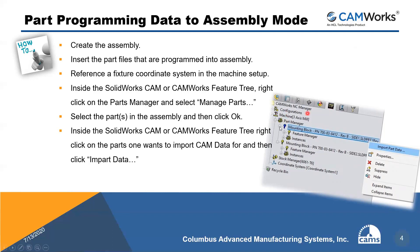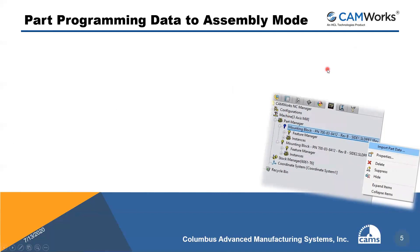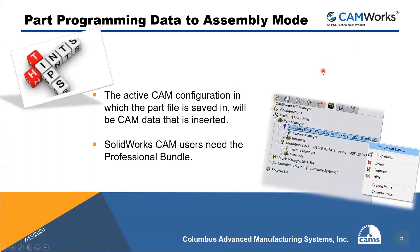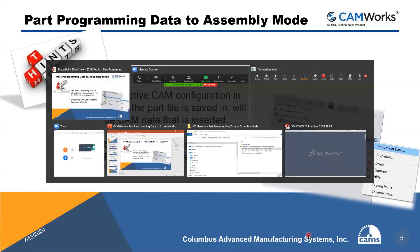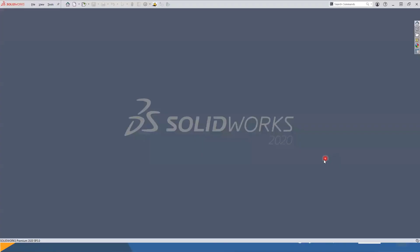You can see a quick picture here, and I'm going to do this live shortly. One quick tip: the active CAM configuration in which the part file is saved will be the CAM data that's inserted into the assembly. SOLIDWORKS CAM needs the Professional bundle, as that's the bundle that supports assembly mode programming. This is also for mill part programming currently.